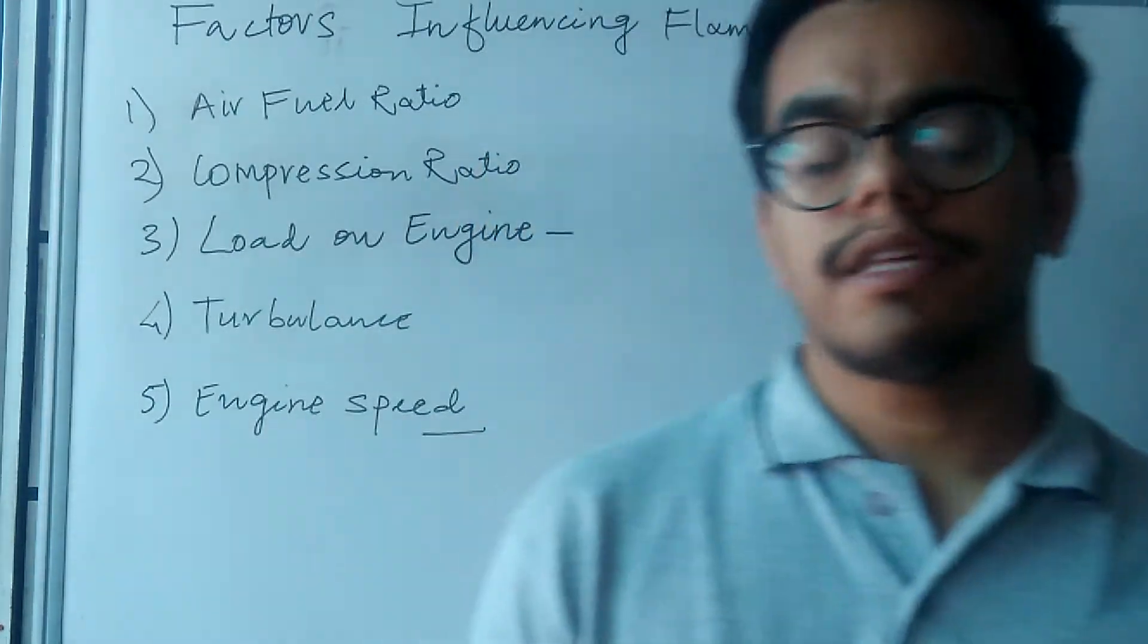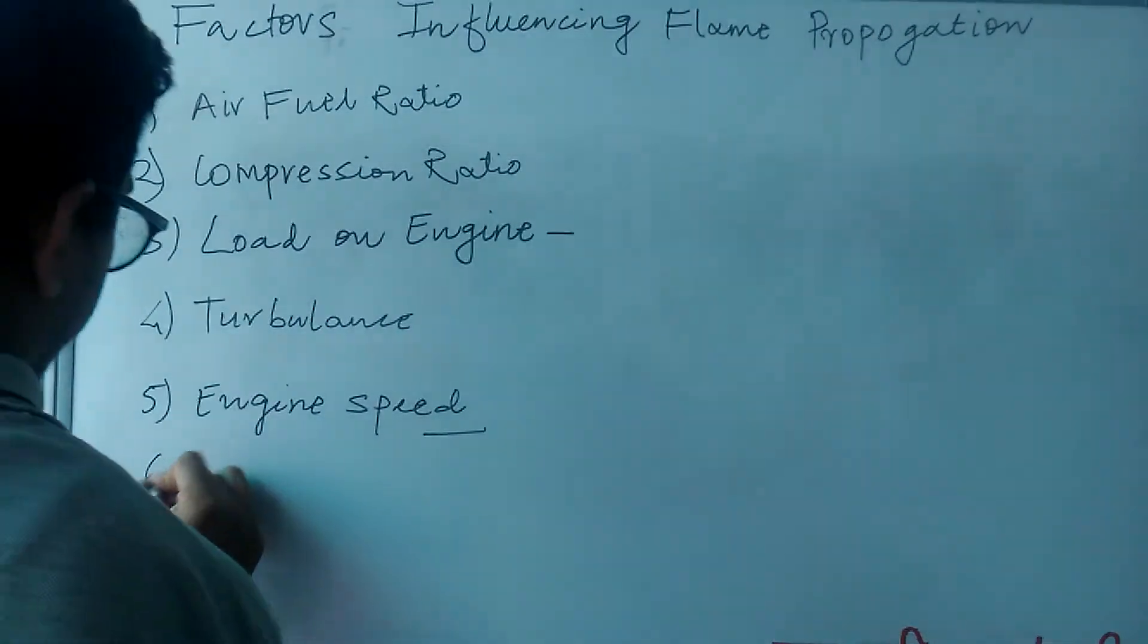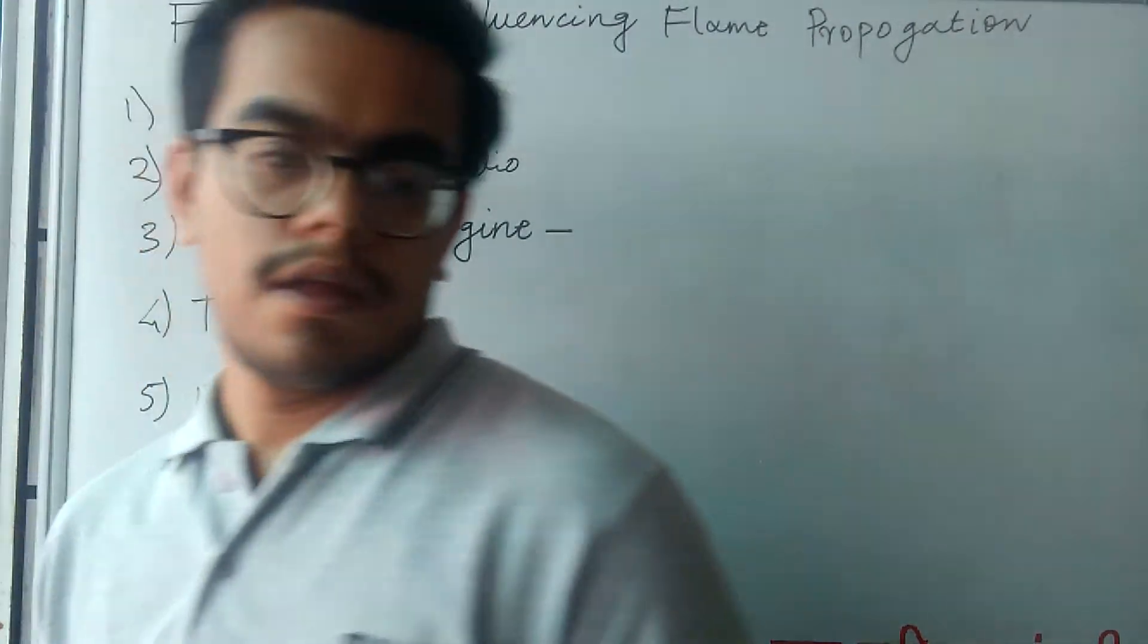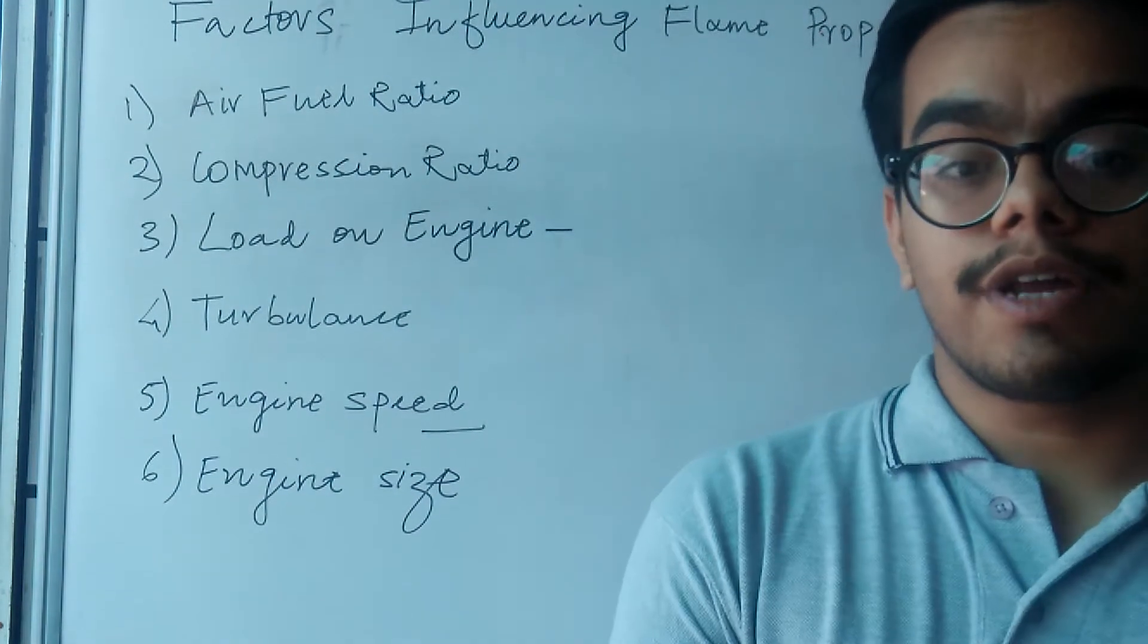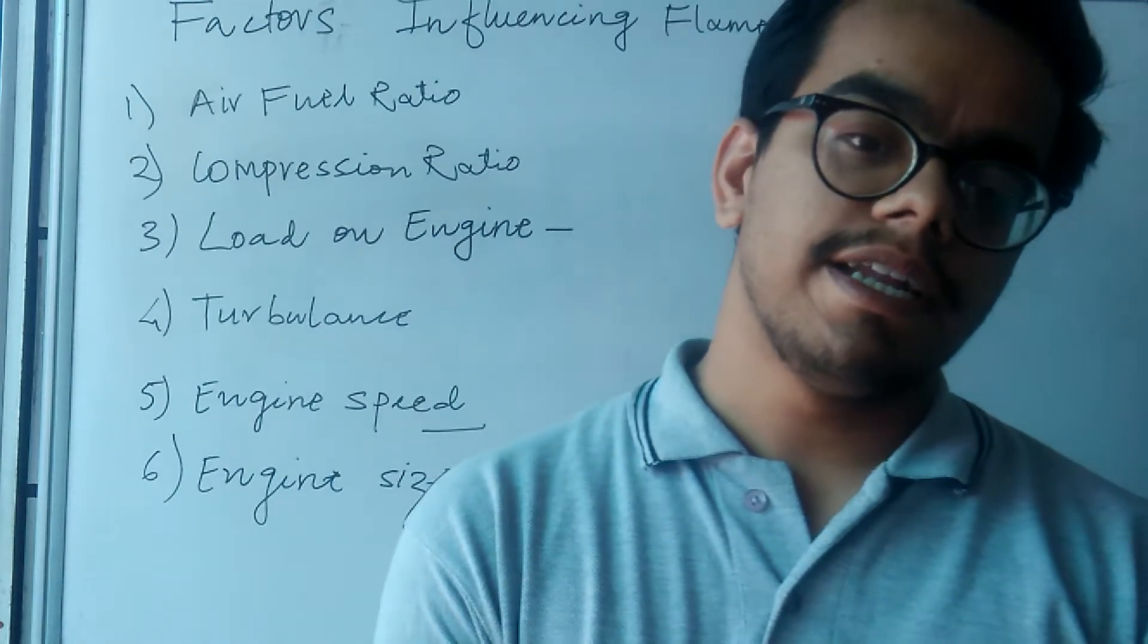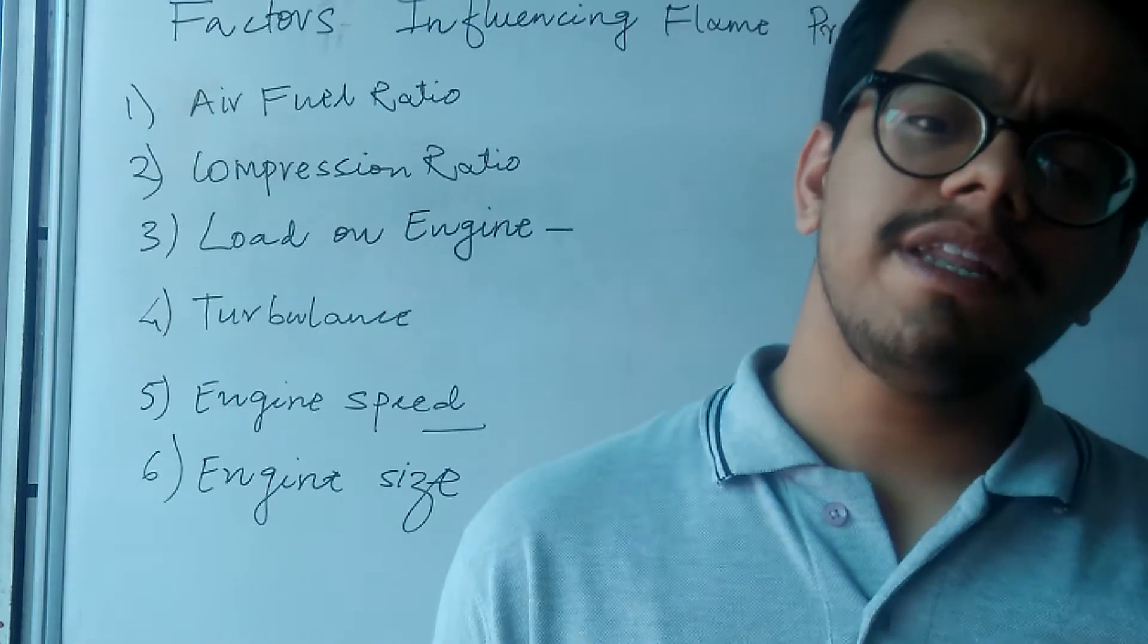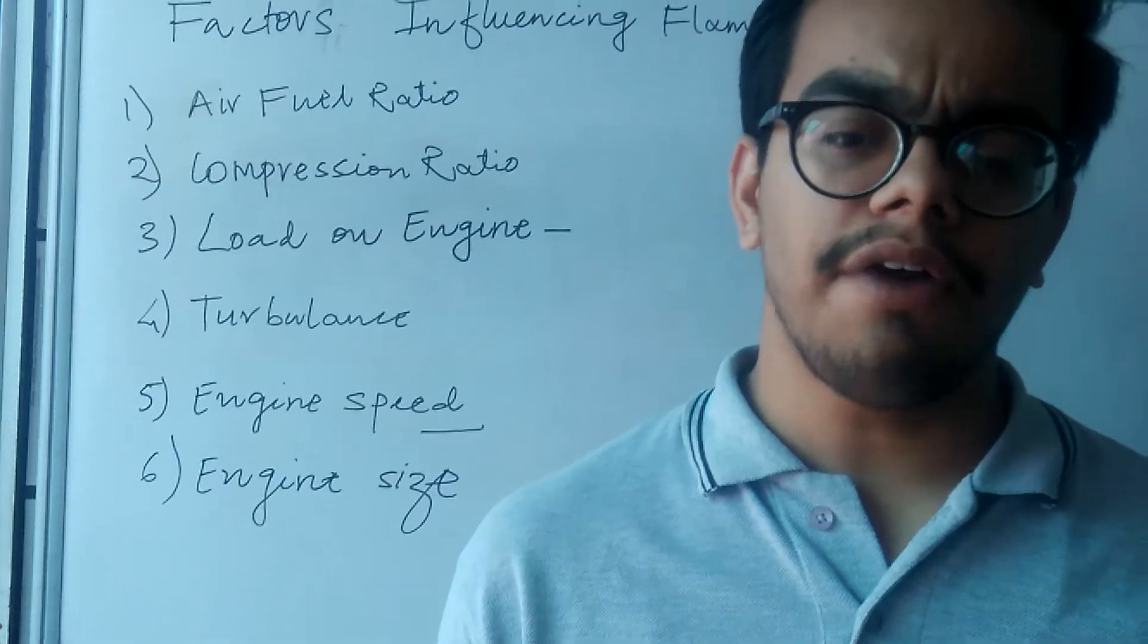The sixth parameter is engine size. Engines of similar design generally run at same piston speed. This is achieved using small engines having larger RPM and larger engines having smaller RPM. When we need larger RPM, we need to have small engines, and when we need smaller RPM, we have to have larger engines.